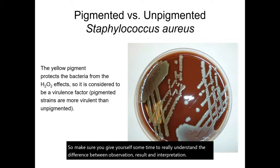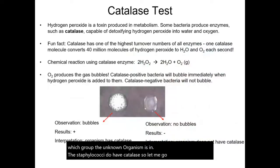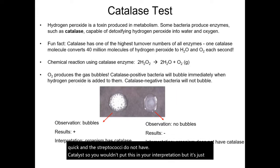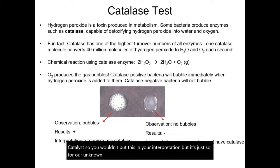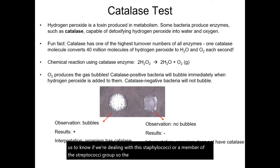The catalase test is important because it helps us identify which group an unknown organism belongs to. The staphylococci do have catalase, while the streptococci do not have catalase. For our unknown number two, the catalase test is done first because it allows us to know if we're dealing with a staphylococci or a member of the streptococci group. So the catalase test is the first thing you do in lab for unit two.